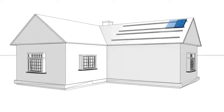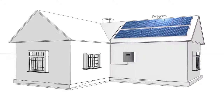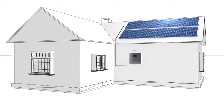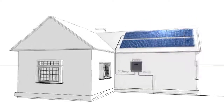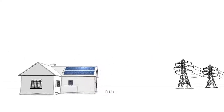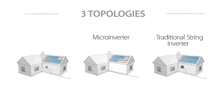A photovoltaic system consists of PV panels, which produce DC power when exposed to sunlight, and an inverter, which inverts the DC power into AC power that is fed into the utility grid. Three different inverter topologies are currently used in PV systems: a traditional string inverter system, a microinverter system, and the SolarEdge solution.